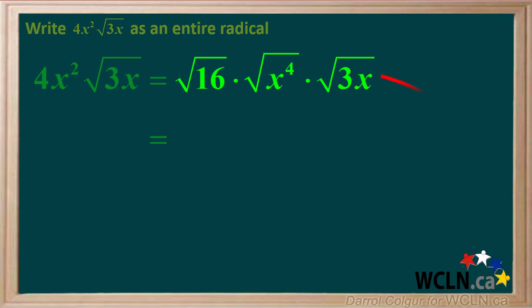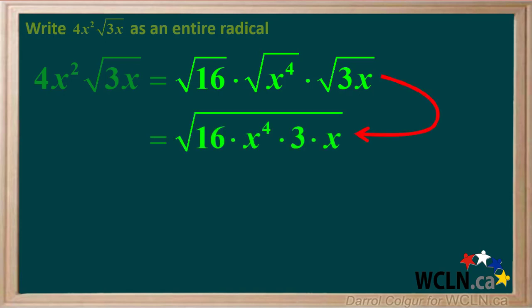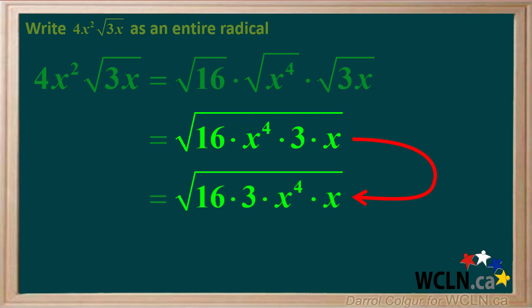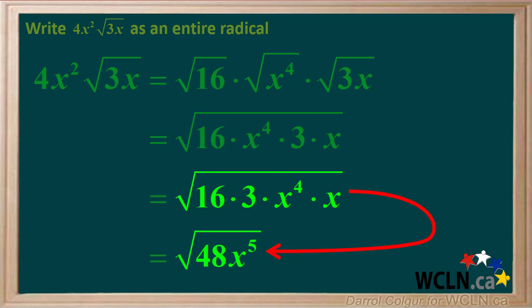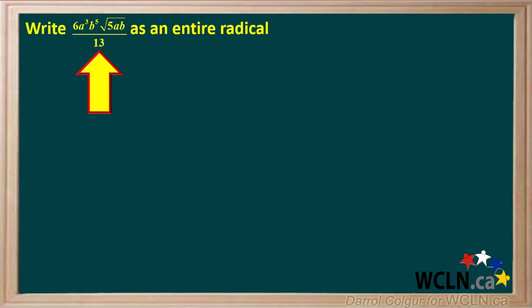We'll combine these to form a single square root, and rearrange the radicands so the numbers are together and the variables are together. 16 times 3 is 48, and x to the 4th times x is x to the 5th. So we get the square root of 48x to the 5th. The same process works for more complex examples.